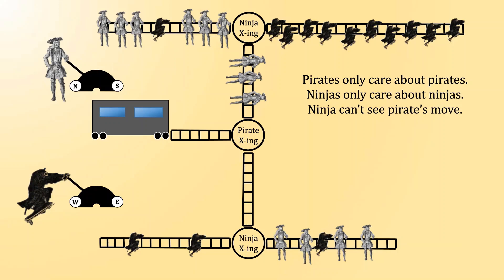In other words, each of these individuals at the switch station only wants to minimize the members of their class that are going to be in the way of the trolley. Meanwhile, when the ninja is choosing whether to send the trolley west or east, he will not have observed whether the pirate has sent the trolley north or south.